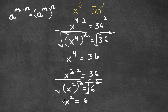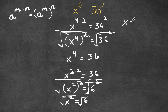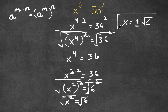Now if I take the square root on both sides, these two cancel out, and I'm left with x is equal to plus or minus the square root of 6. So this is our answer.